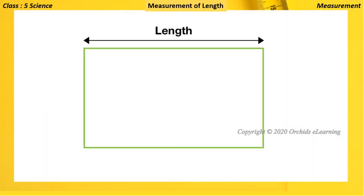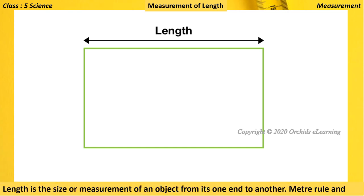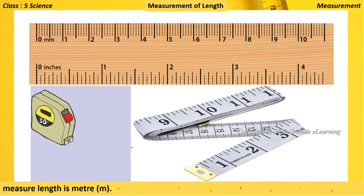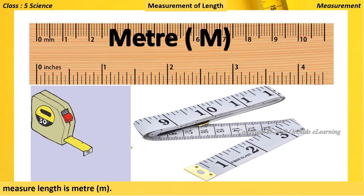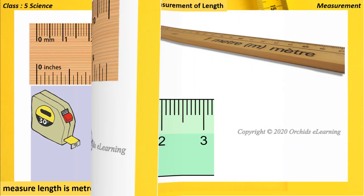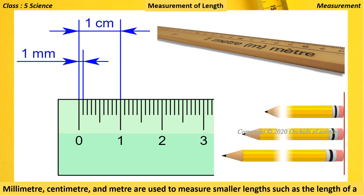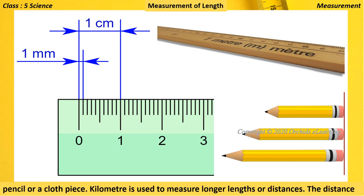Measurement of length: length is the size or measurement of an object from one end to another. A meter ruler and a measuring tape are instruments used for measuring length. The standard unit used to measure length is the meter. Millimeter, centimeter, and meter are used to measure smaller lengths, such as the length of a pencil or a cloth piece.